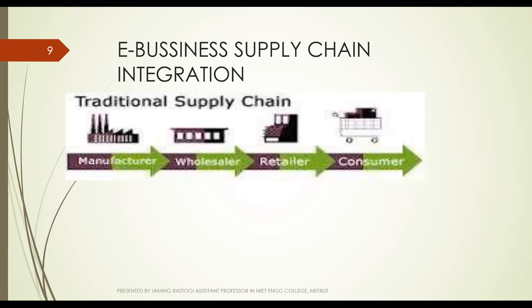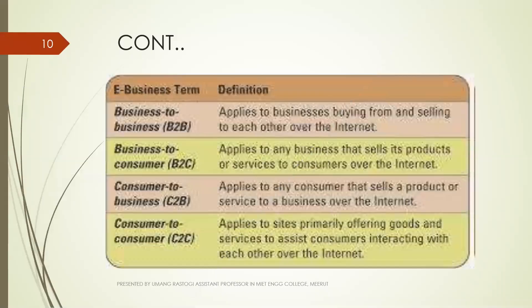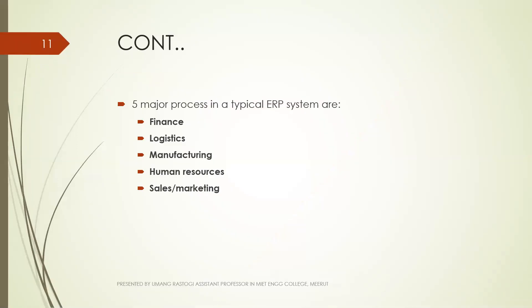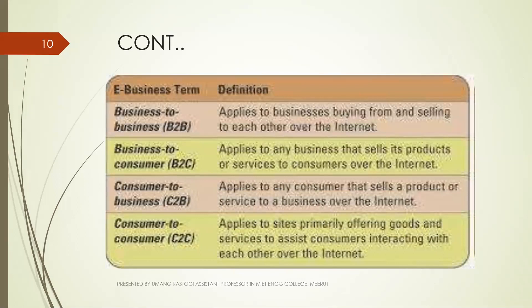In e-business, a typical ERP system has five major processes. Before discussing those, it's important to understand the four e-business terms: B2B — business to business — applies to businesses buying from and selling to each other over the internet; B2C — business to consumer — applies to any business selling products or services to consumers over the internet; C2B — consumer to business — applies to any consumer selling a product or service to a business over the internet; and C2C — consumer to consumer — applies to sites primarily offering goods and services to assist consumers interacting with each other over the internet.